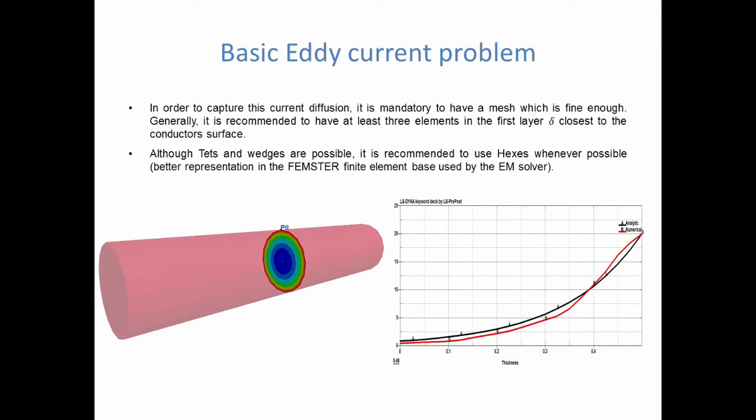However, what is important on the user's side, it's important to calculate using that formula an estimated value, because this will give us a mesh size criteria. In order to capture this current diffusion, what is recommended is to have a mesh which is fine enough, and generally we say that the user should put at least three elements in the first layer closest to the conductor's surface.